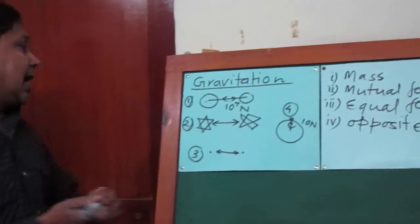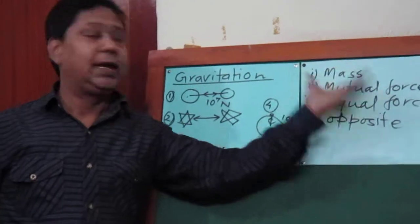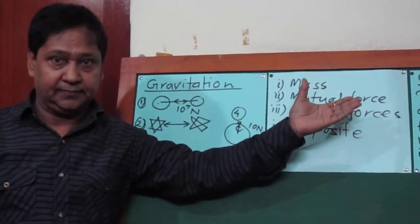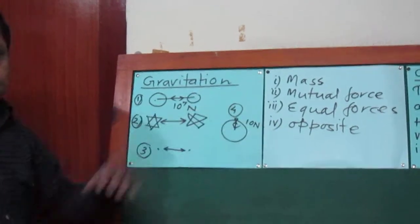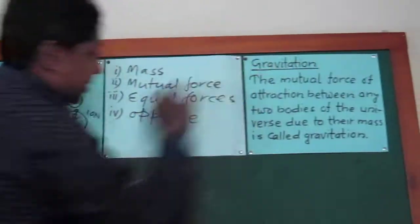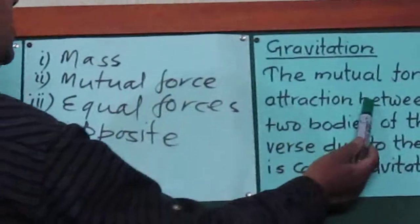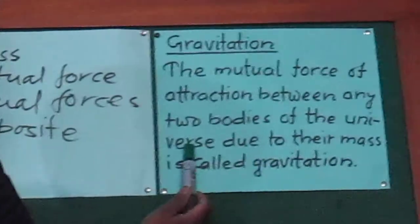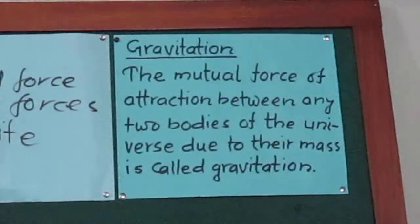Looking at all these characteristics, we are now able to define gravitation correctly. Looking at all these points, we can define gravitation like this: the mutual force of attraction between any two bodies of the universe due to their mass is called gravitation.